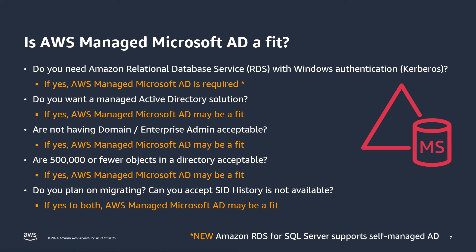Next: do you want a managed Active Directory solution? If yes, AWS Managed Microsoft AD may be a fit. Is not having domain or enterprise admin acceptable? If yes, it may be a fit. Are 500,000 or fewer objects in Active Directory acceptable? If yes, AWS Managed AD may be a fit. Finally, do you plan on migrating to AWS Managed AD and can you accept that SID History is not available? SID History allows customers to reuse existing SIDs — unique identifiers for each AD object — when migrating from one domain to another. It is not enabled by default with AWS Managed AD. If the answer is yes to both, AWS Managed AD may be a fit.